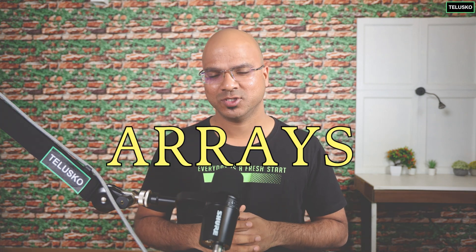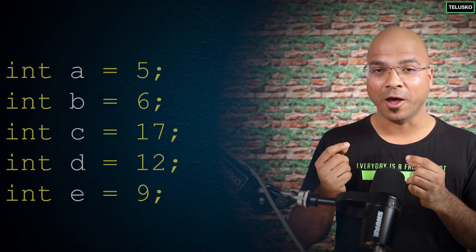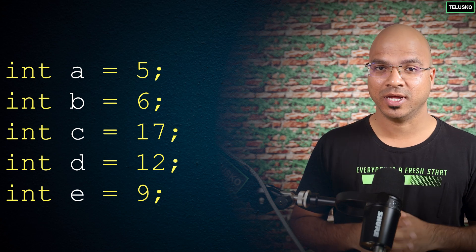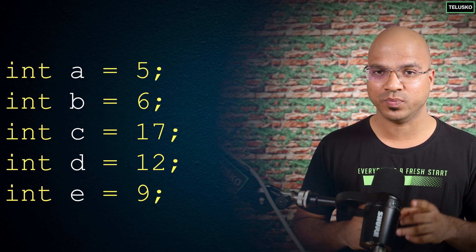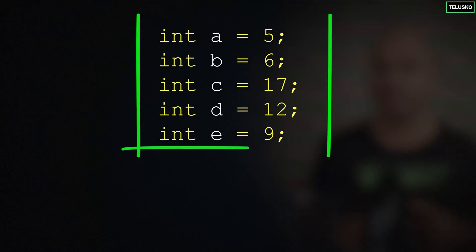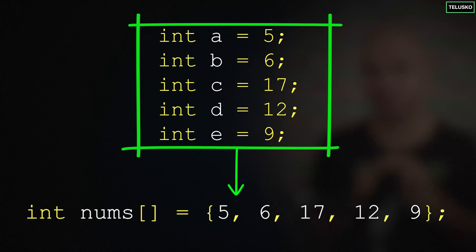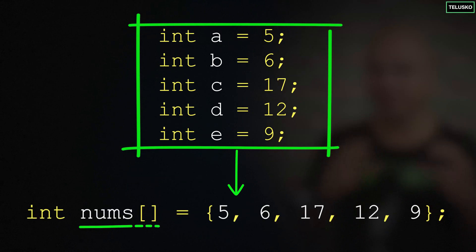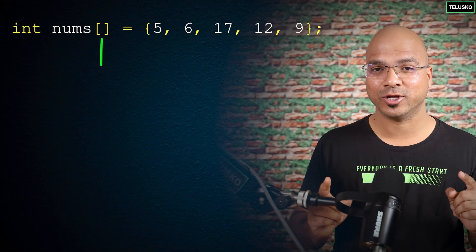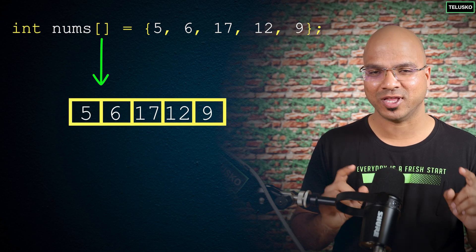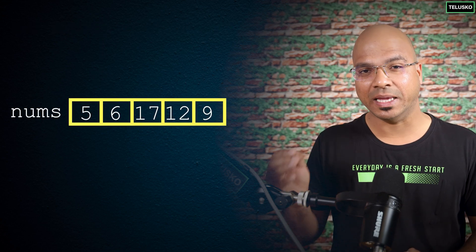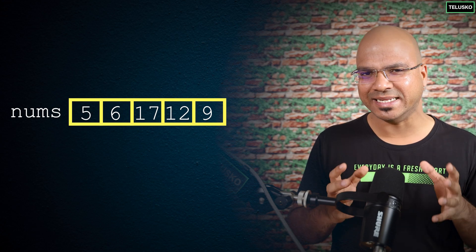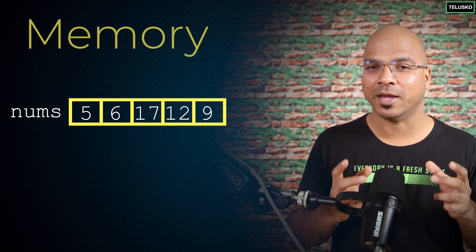In this video let's talk about arrays. Let's say you have a bunch of values — say five values. Instead of storing them in five different variables, we can store them in one particular sequence, one variable. In this array you can store five values, and this array will have a name to it.